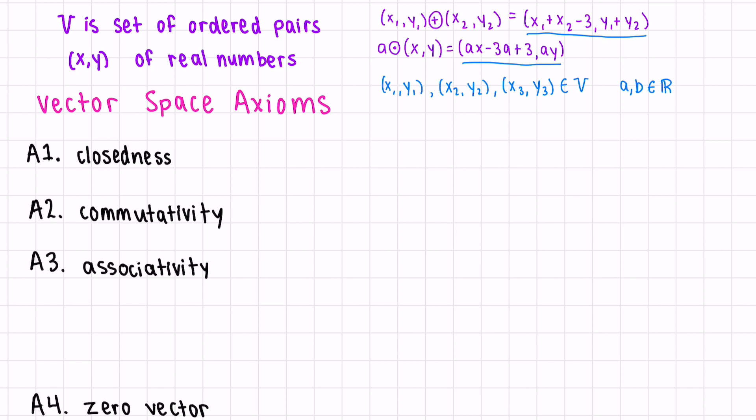Let's start with closure. What happens when we add these two vectors together? Because the x's and y's are real numbers, regardless of what they are, when we add them together we'll get another pair that is in our vector space.